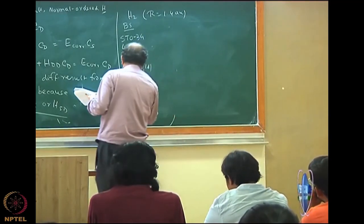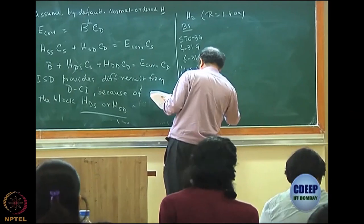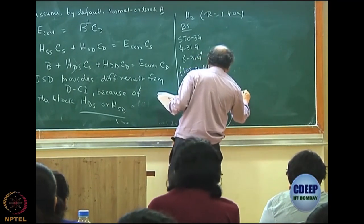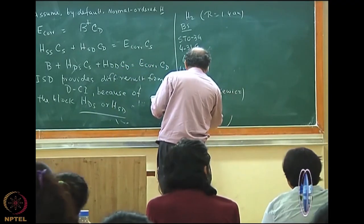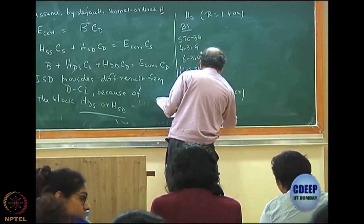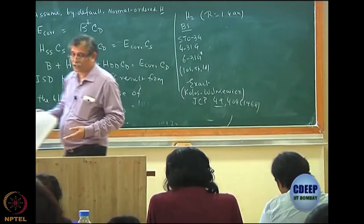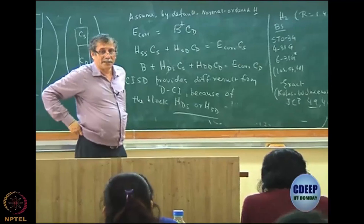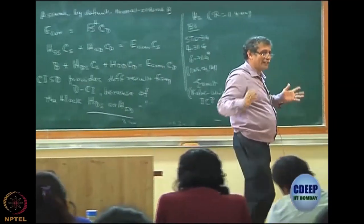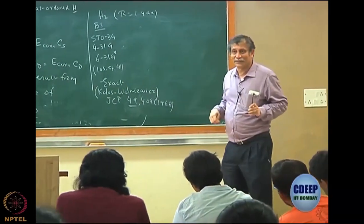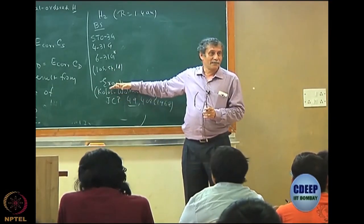Both Kolos and Wolniewicz are Polish. The paper appeared in JCP, volume 49, 1968 — it is a very famous paper where the hydrogen molecule is almost beaten to death. You cannot do much better than that. They had a very large calculation, almost near exact, so I am quoting this as the exact result. This exact basis is much larger than all the other bases listed here.